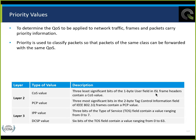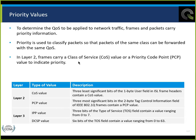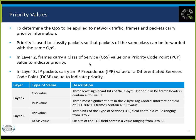There's a class of service used in an ISL frame — the three most significant bits in the 2-byte control information in 802.1Q. Class of service, ISL — we don't really have to worry about that anymore. PCP value in 802.1Q, IPP type of service, and the number of bits used for each. IP packets carry an IP precedence or a differentiated services code point value to indicate priority.